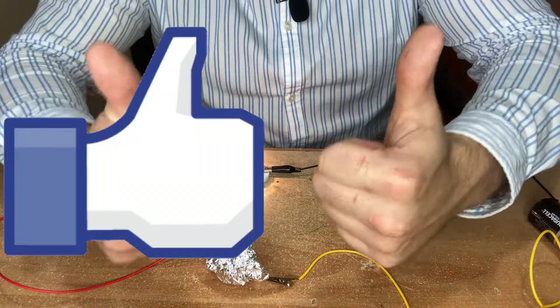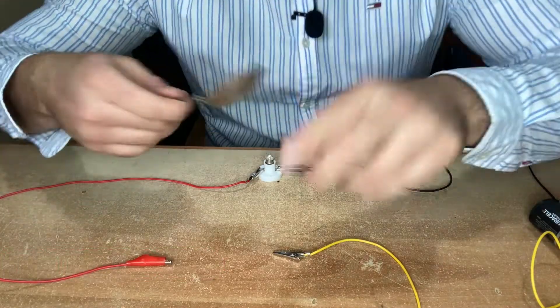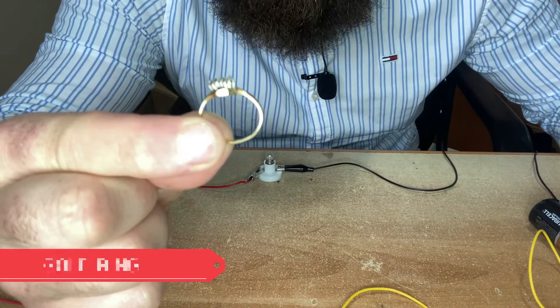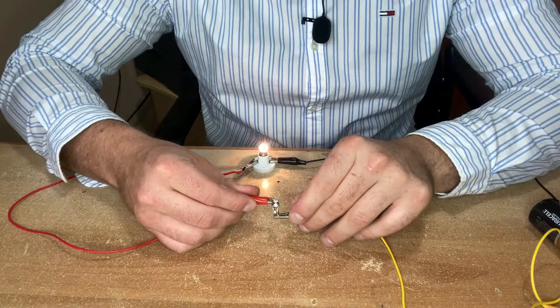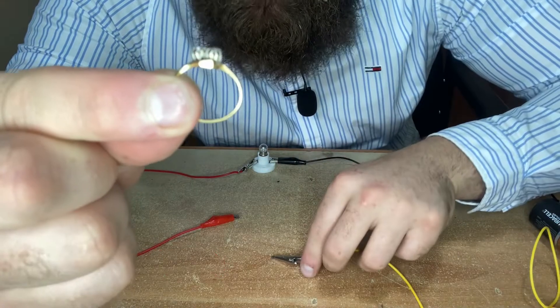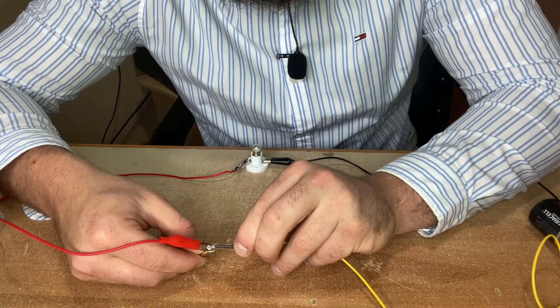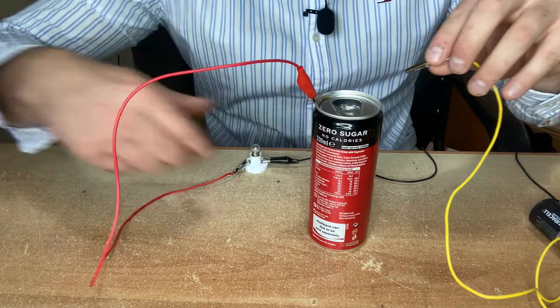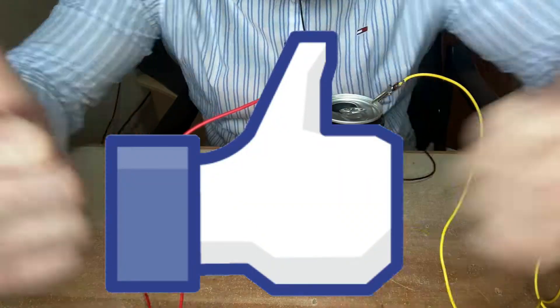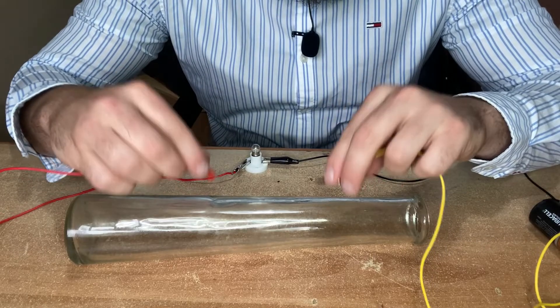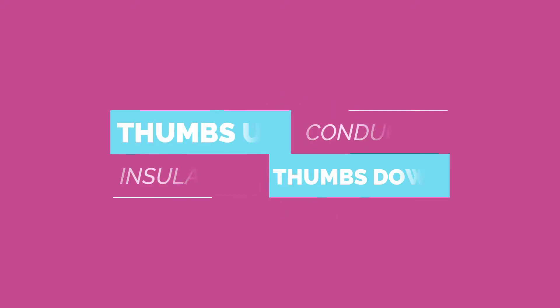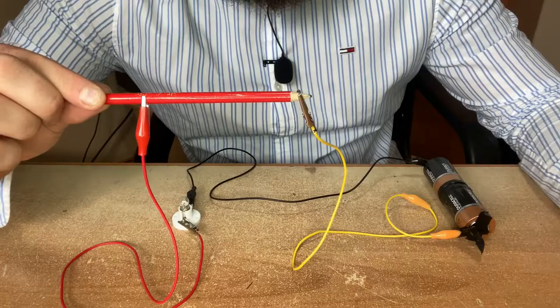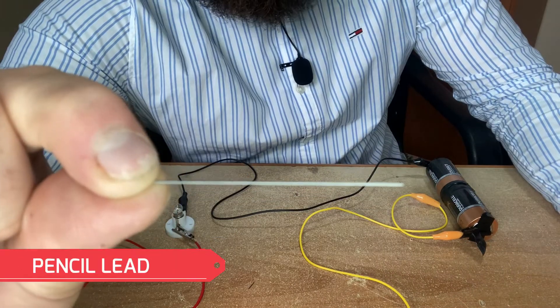What about this golden ring? Conductor. I wonder if the diamonds at the top conduct electricity. And they don't, the light bulb's off, it's an insulator. Let's try the soda can. Conductor. What about this glass vase? Insulator. This string? Insulator. A pencil? The light bulb's off, it's an insulator. What about the lead of a pencil? A conductor.